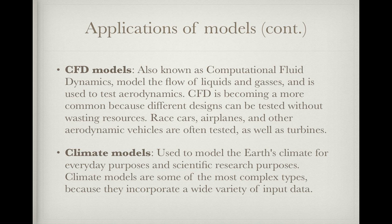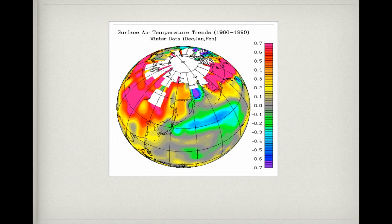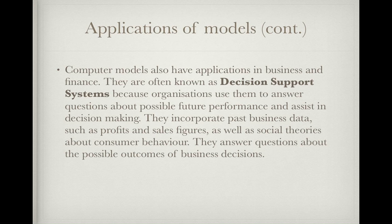Climate models are used to model the Earth's climate for everyday purposes and scientific research. They are some of the most complex types because they incorporate a wide variety of input data, such as heat, pollution, gas concentration, and even external radiation from the sun, which can make them difficult to build accurately. This is a surface temperature climate model. Computer models also have applications in business and finance, often known as decision support systems. Organizations use them to answer questions about possible future performance and decision-making, incorporating past business data such as profits and sales figures, as well as social theories about consumer behavior.